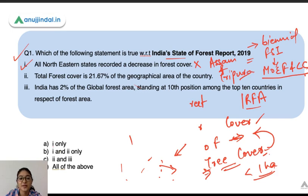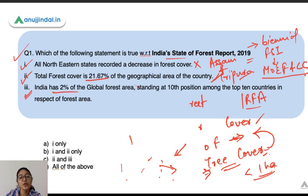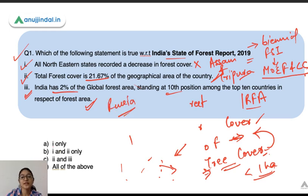Barring these two states, all northeastern states have recorded a decrease in forest cover. The second statement — that the total forest cover is 21.67% of the geographical area of the country — is absolutely correct. The third statement — that India has 2% of the global forest area, standing at 10th position among the top 10 countries — is also correct. The top country is Russia. So the correct option is statements 2 and 3.